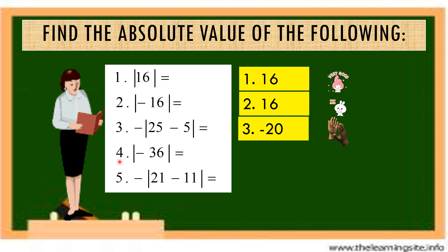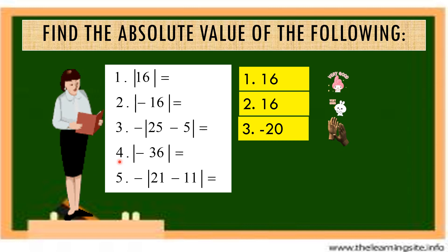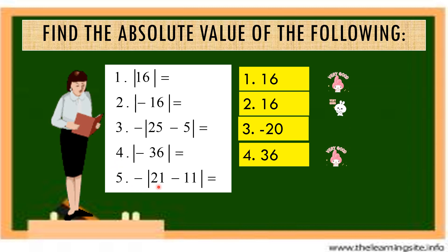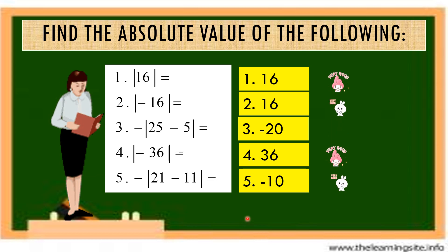Number 4: the absolute value of negative 36. The answer is 36. Very good. For the last number: the opposite of the absolute value of 21 minus 11. The result is negative 10. Congratulations — very good for completing our exercises.